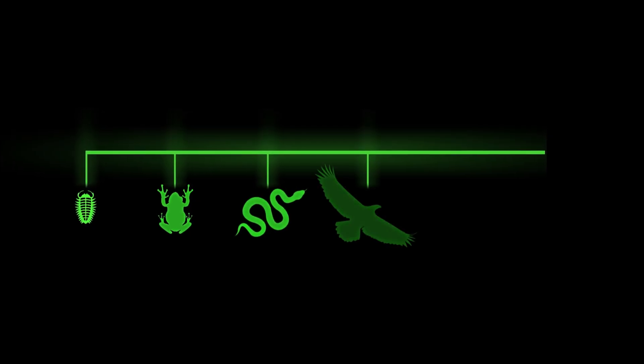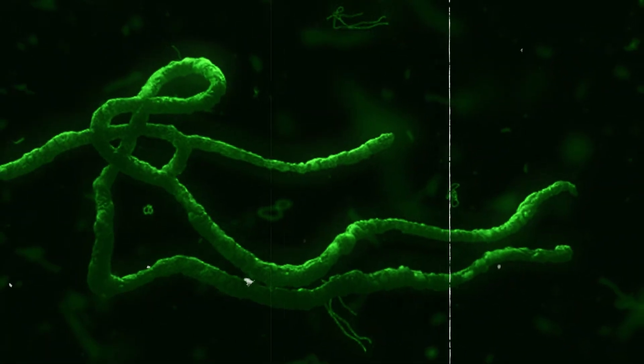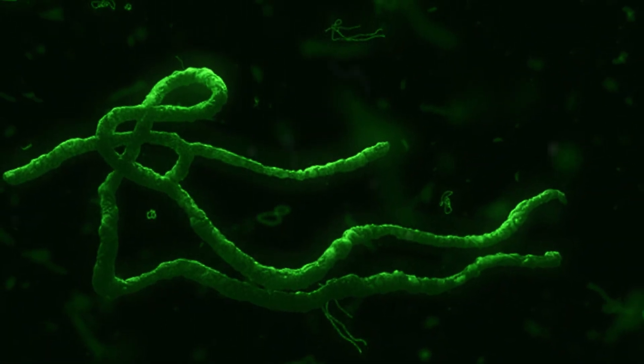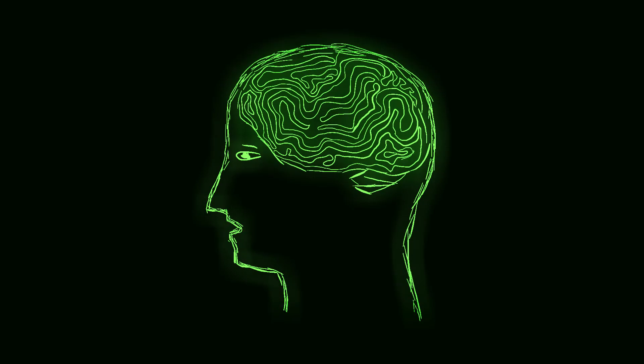As life slowly returned after each extinction, animals began to grow larger, smarter, and more complex. But while they were learning to survive again, parasites were already several moves ahead. One of the most shocking was mind control.